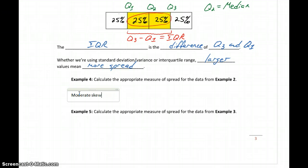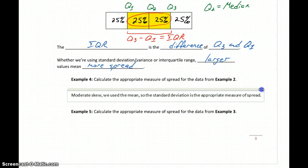So since our data set had moderate skew, we use the mean. So we look at the standard deviation as our appropriate measure of spread. And in this case, the standard deviation was 13.27, and the variance was 175.996, depending on how we want to round those different values.